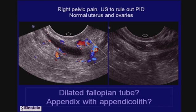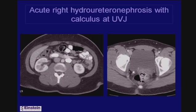Another patient with right pelvic pain to rule out PID had a normal uterus and two normal ovaries, and another tubular structure with a bright echo producing a posterior shadow. This was not the appendix — this patient turned out to have acute right hydronephrosis, and what was being imaged was a calculus in the distal ureter.